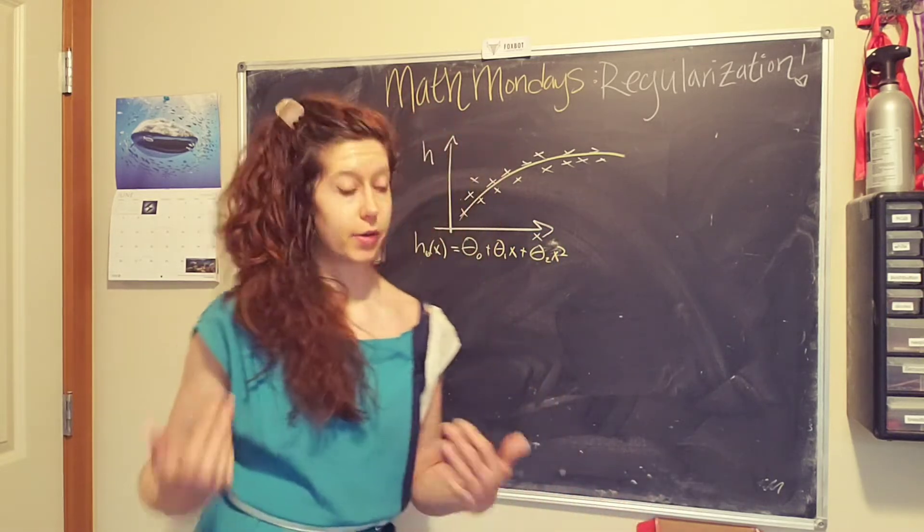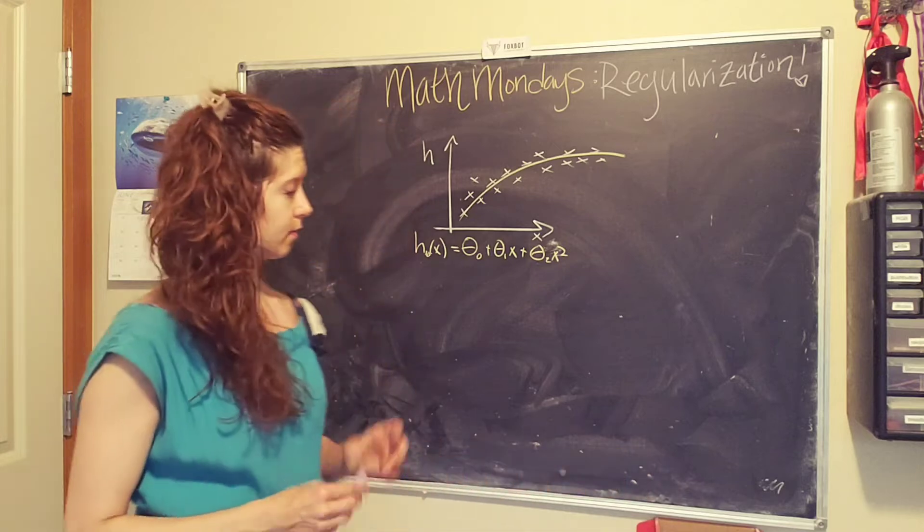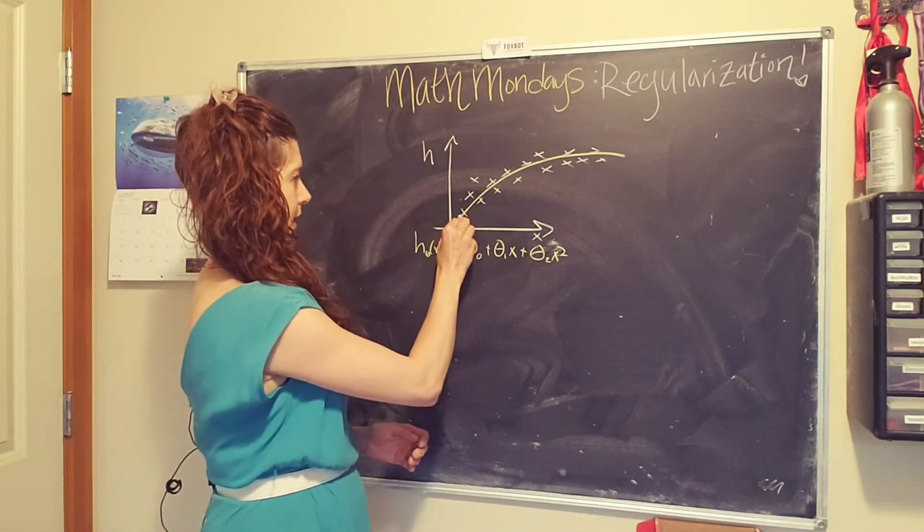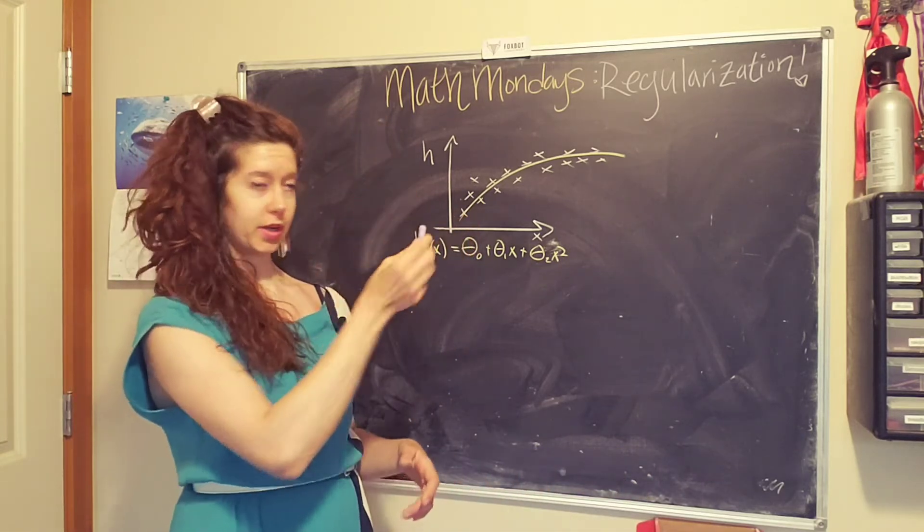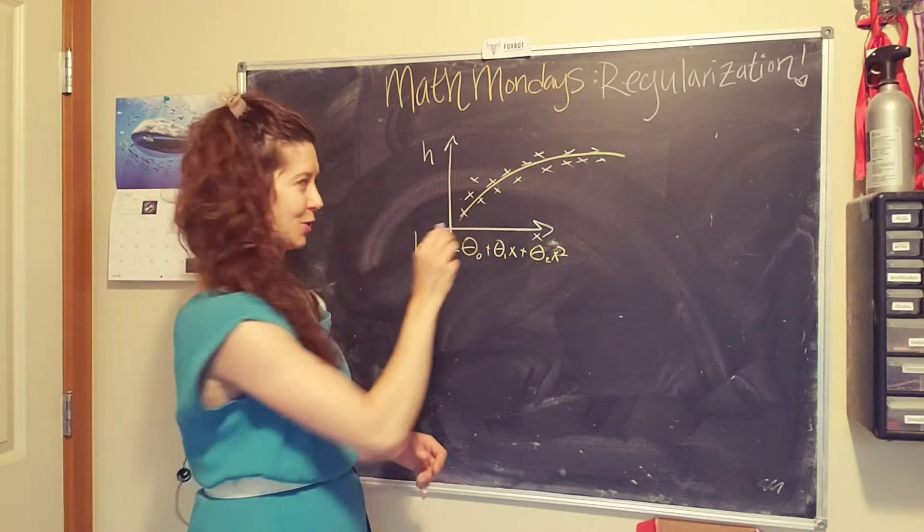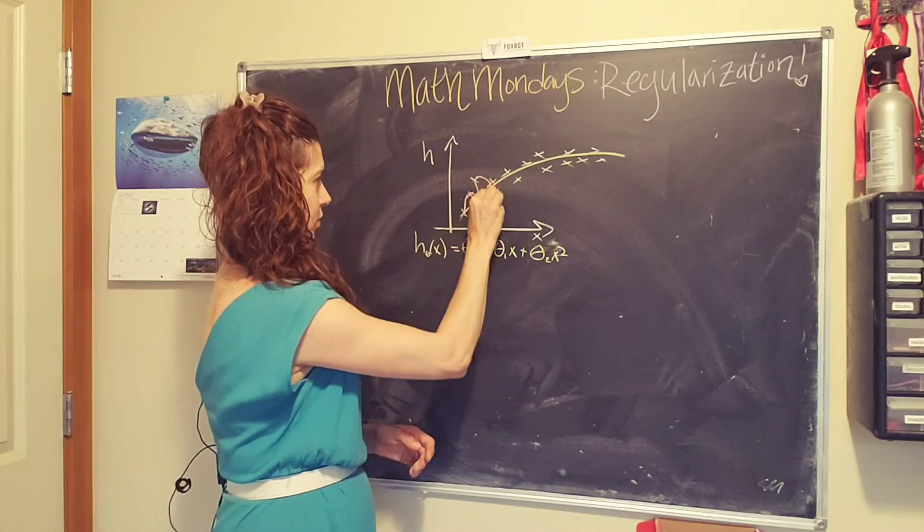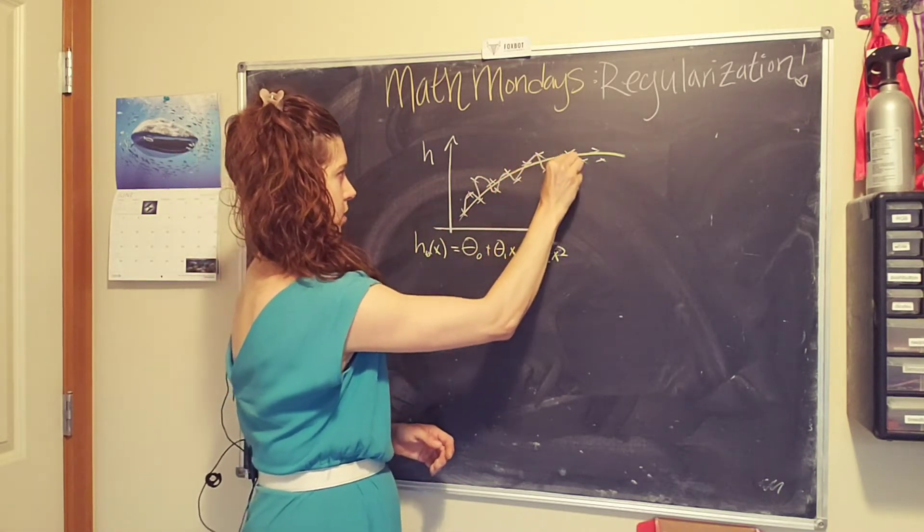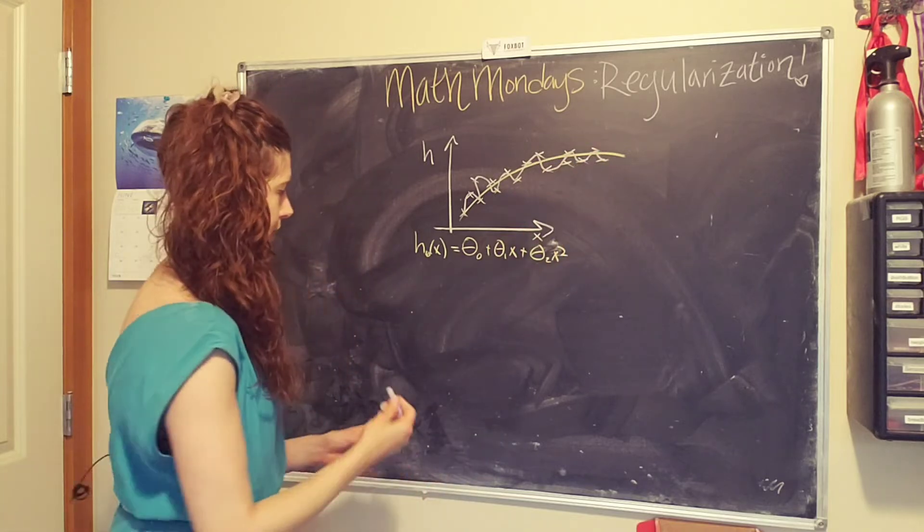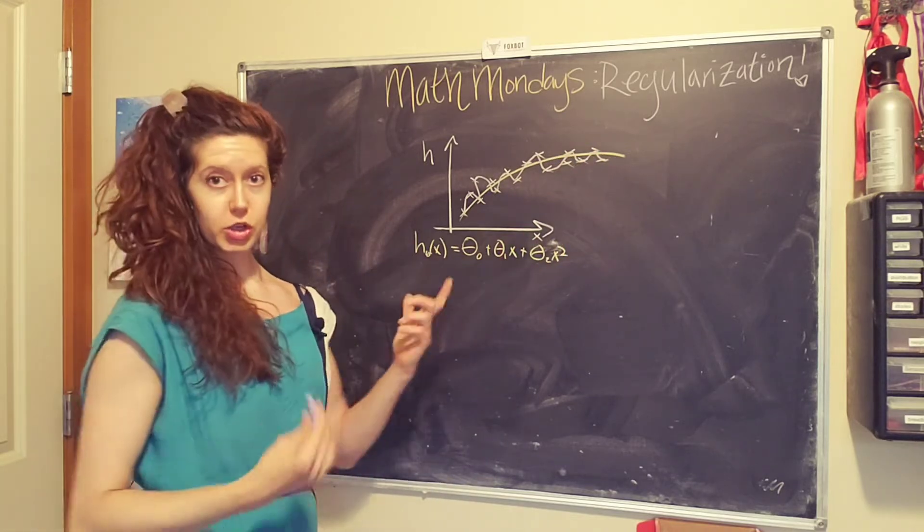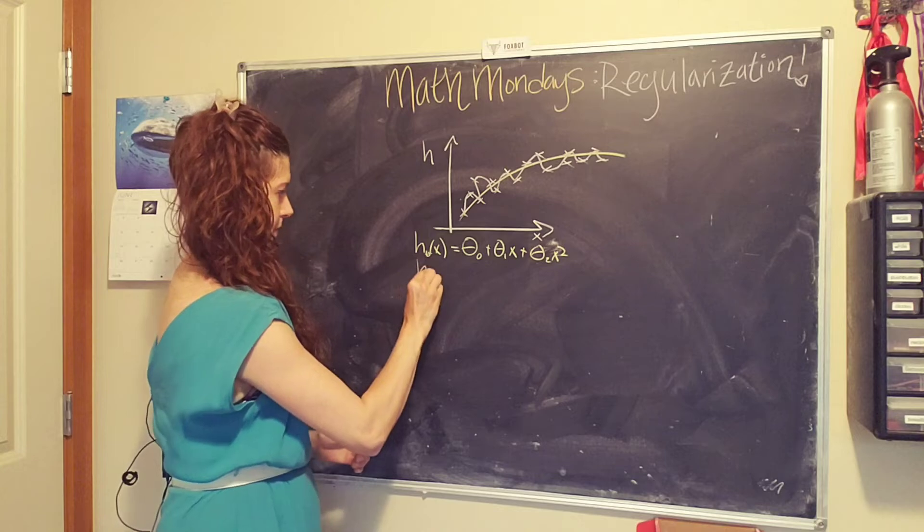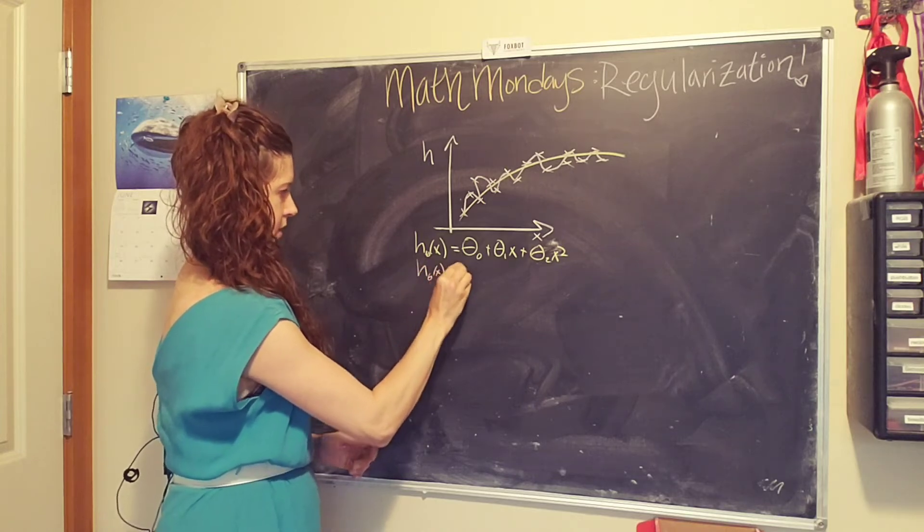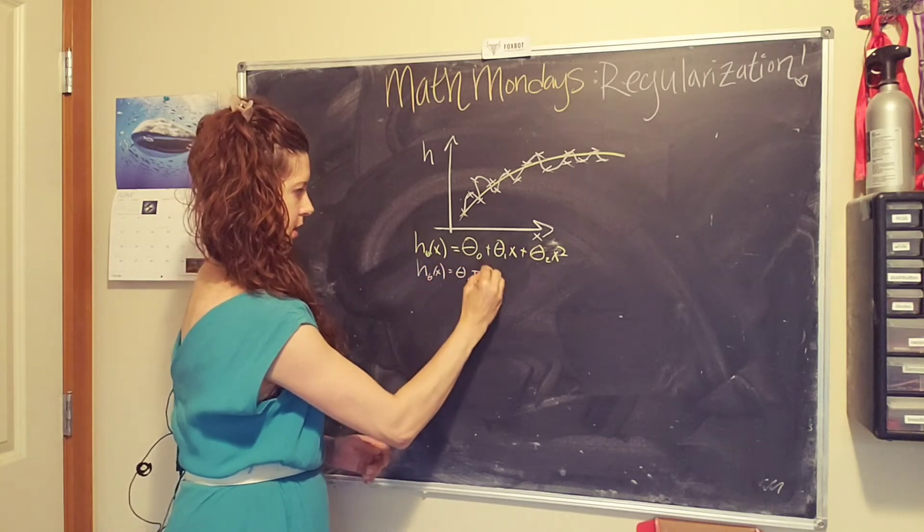But if we have an overfitting machine learning algorithm, it might try to squiggle between all of the data points. It's a very technical term, squiggle. So do something funky like this and we're like, no, that's very silly, we don't want that.